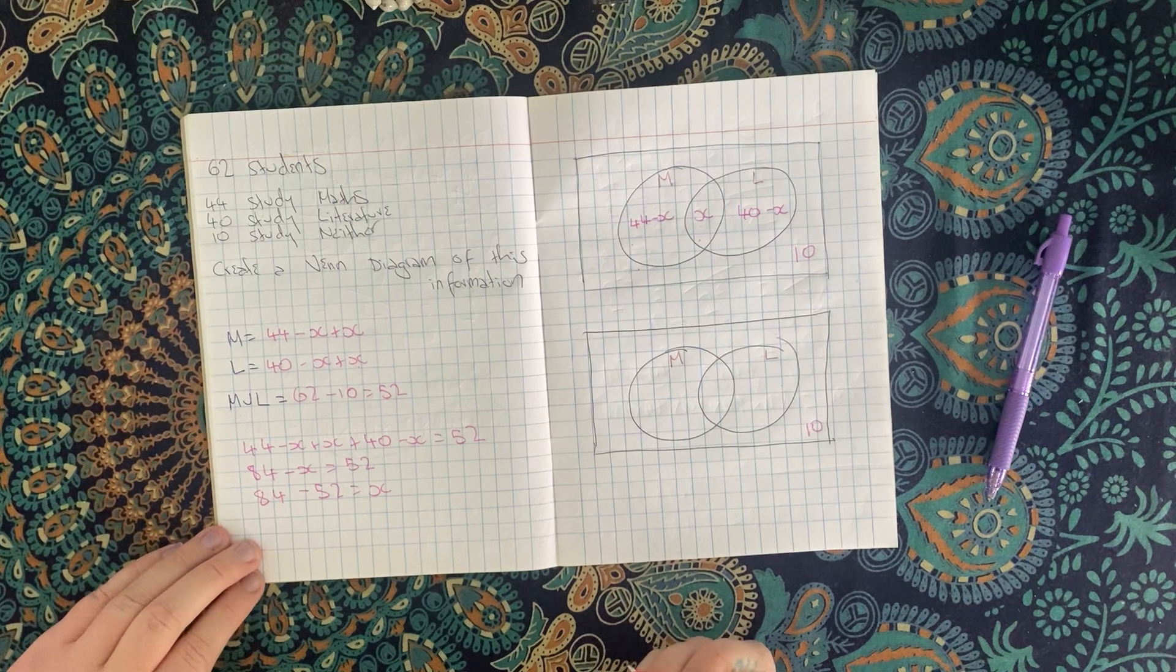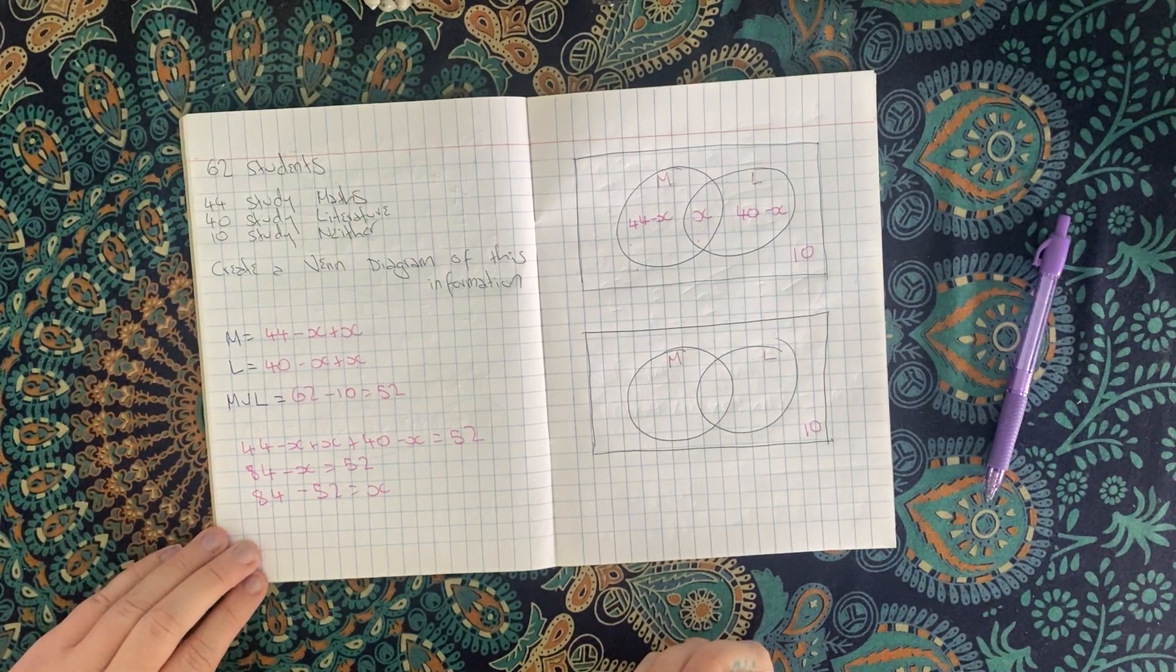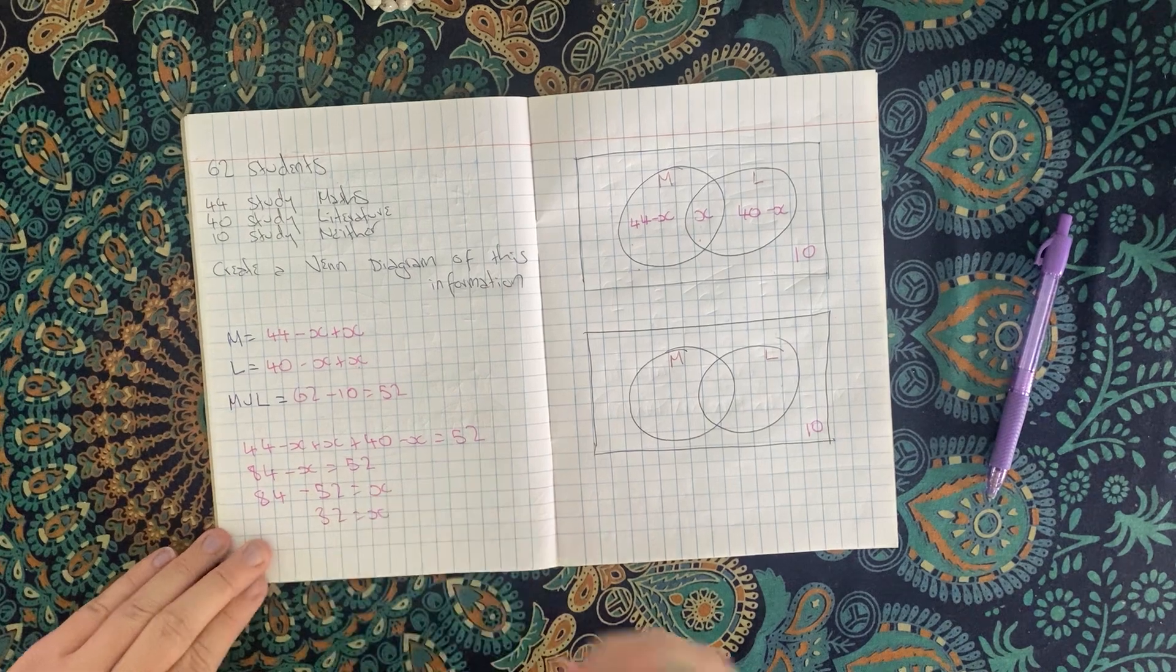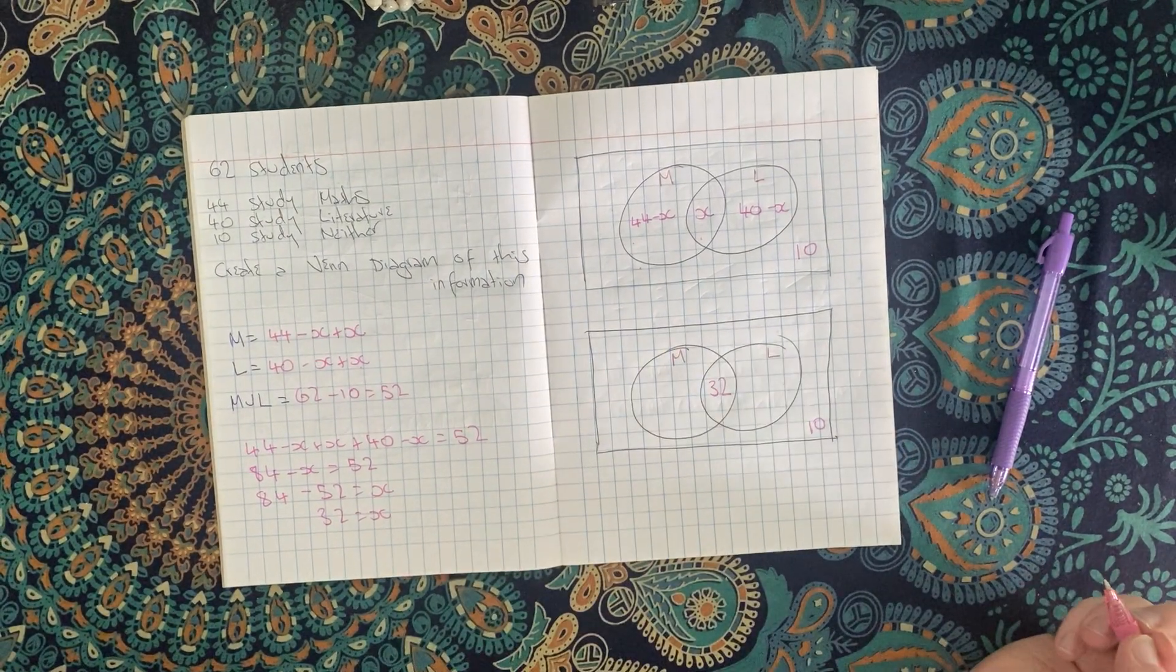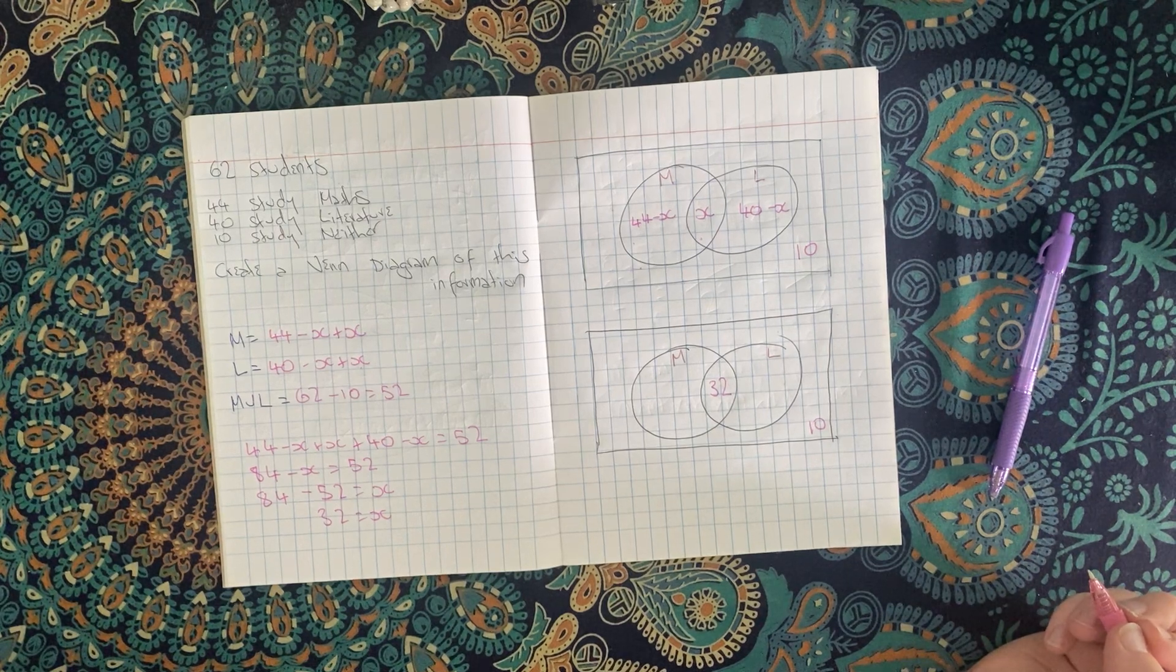So then I'm left with 84 minus 52 equals X. We should be able to work out what that is, which is just 32. So now I know that 32 is my intersection. That's how many students take both maths and literature.